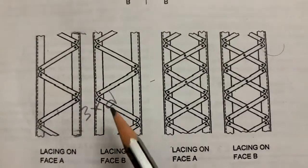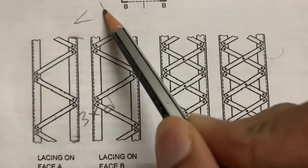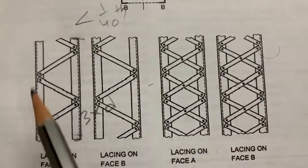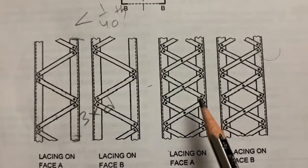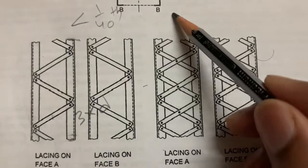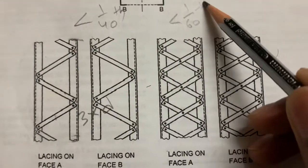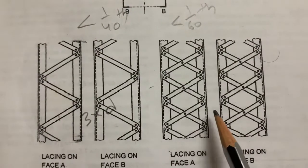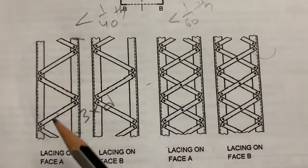Regarding thickness, for single lacing bars the code specifies it should not be less than 1/40th of its effective length. For double lacing bars, the thickness should not be less than 1/60th of its effective length.